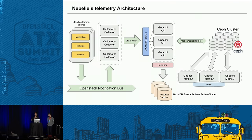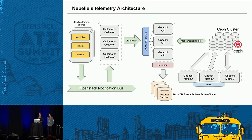When the Gnocchi API first pushes metrics into the Ceph cluster, the data is in raw format. We have to aggregate that data according to rules created in the Gnocchi API. A pool of Gnocchi metricD processes takes the raw data from Ceph, aggregates it according to our policies, and pushes the data back. That pool of Gnocchi metricD processes is coordinated by a Redis cluster.